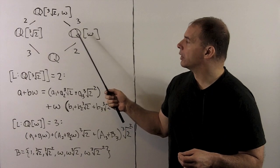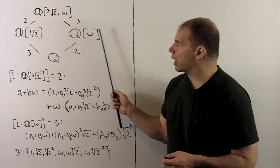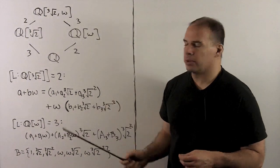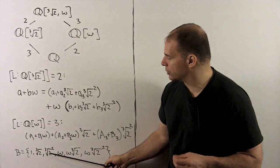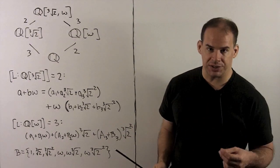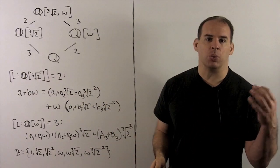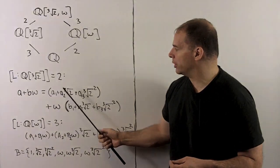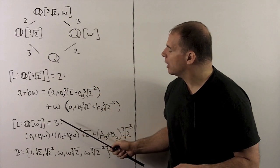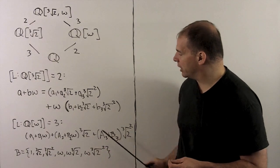Setting up our field tower with degrees labeled, L has degree 6 over Q. A basis for L over Q is {1, ∛2, ∛2², ω, ω·∛2, ω·∛2²} — 6 elements, confirming degree 6. For L over Q(∛2), the degree is 2 with basis {1, ω}, where coefficients are in Q(∛2). Likewise, for L over Q(ω), the degree is 3 with basis {1, ∛2, ∛2²}, where coefficients are in Q(ω).